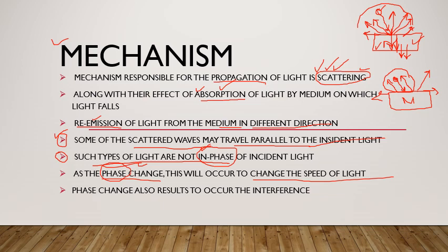اس کو ایک example سے سمجھتے ہیں: اسامہ کافی speed سے بھاگ رہے ہیں، سامنے سے ادنان آ گئے اور اسامہ کو روکنے کی کوشش کی۔ اسامہ رکے تو نہیں لیکن انہوں نے direction change کر لی — جیسے ہی direction change کی ان کا phase change ہو گیا، مطلب جس angle سے آ رہے تھے اس سے مختلف angle میں گئے۔ اسی طرح جیسے ہی angle/phase change ہوگا، speed of light بھی change ہو جائے گی۔